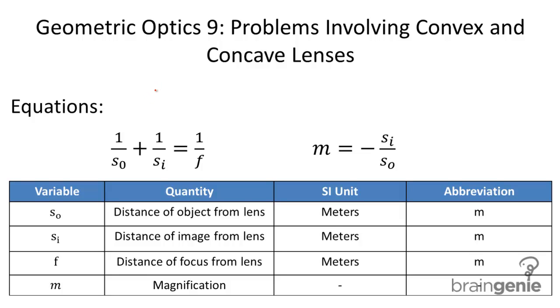A couple important things to note about the signs here. When we have SI, when this is positive, that means that the image is real, so we have a real image. When SI is negative, we have a virtual image.